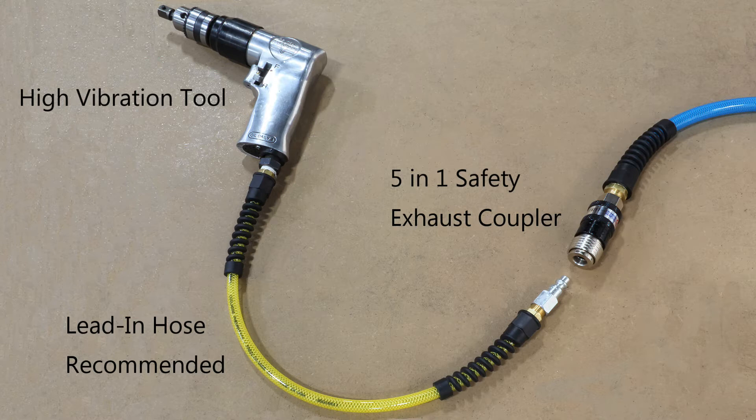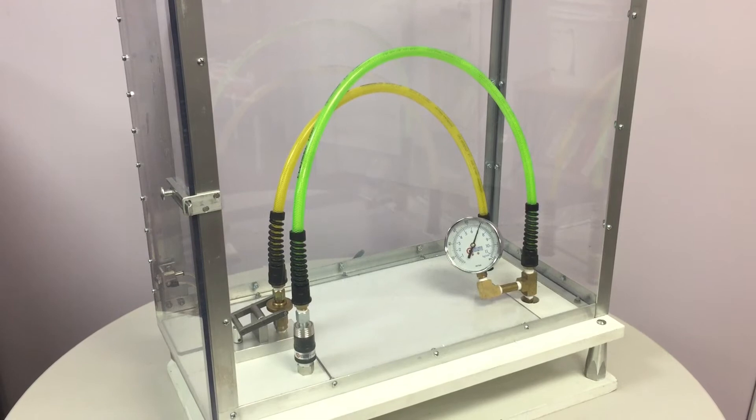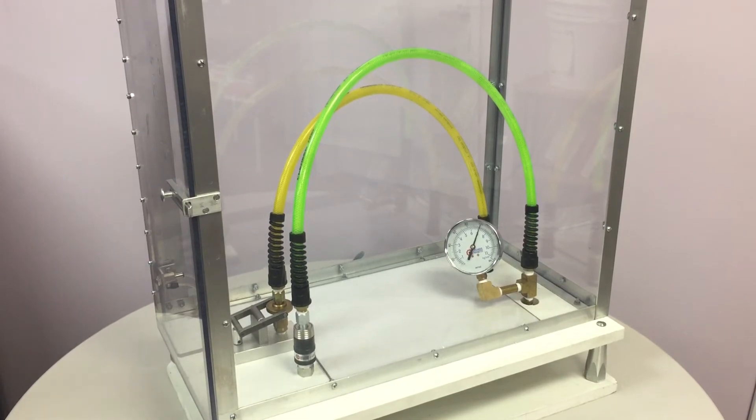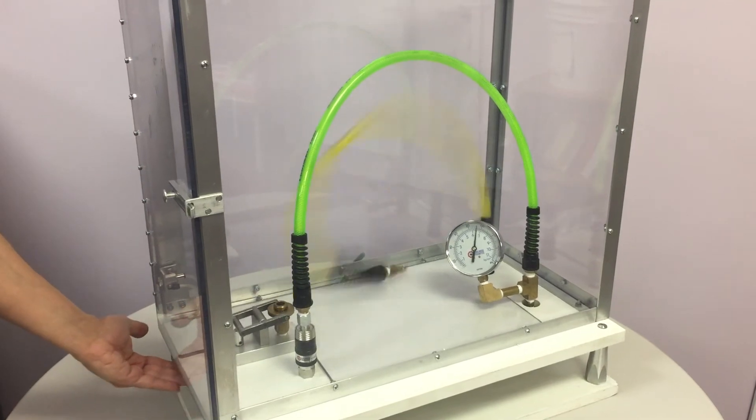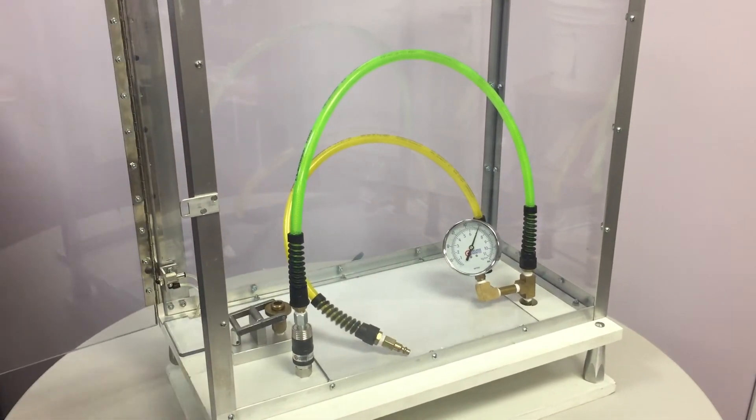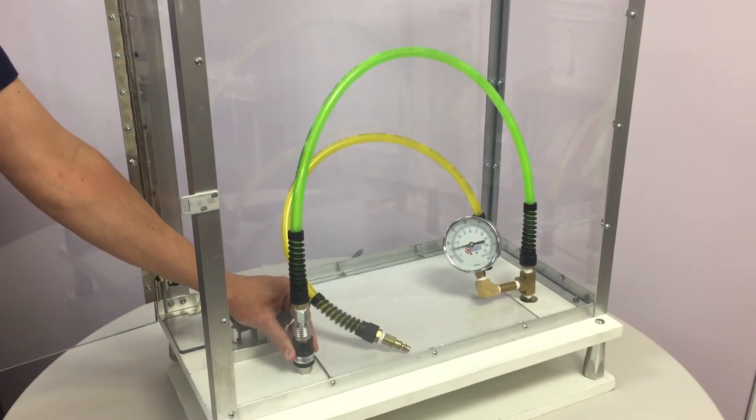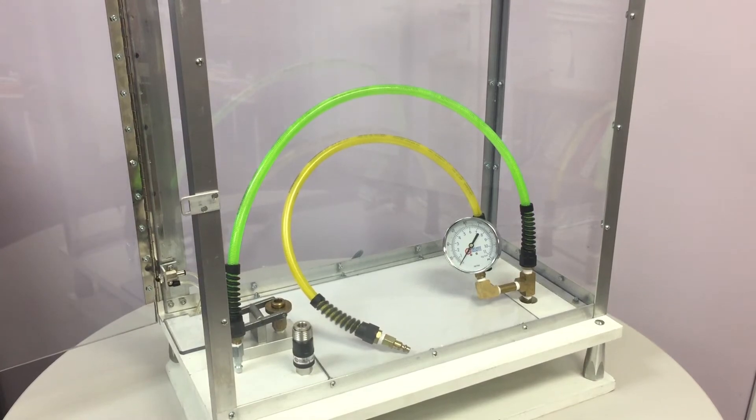Let's demonstrate the pressure release and hose whip from a standard coupler versus the 5-in-1 safety exhaust coupler. As you can see, the hose whip can be dangerous, but with the safety exhaust coupler, the air is vented before you disconnect, making it much safer.